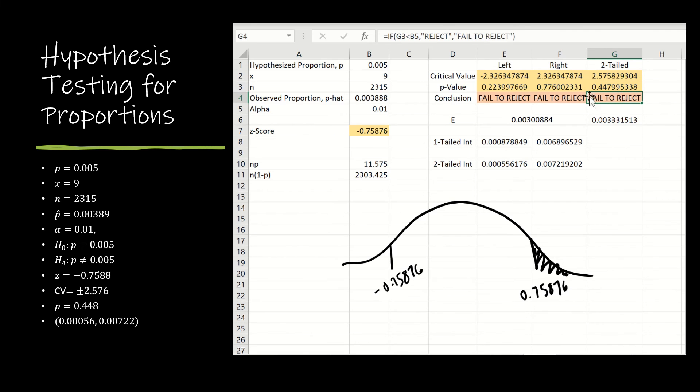And then feel free to use the reject-fail to reject hack for the if-then statement. In terms of the margin of error, it's exactly the same thing we did for a one-tailed test, except that I need to use my two-tailed critical value instead. And then again, my interval is always centered at P-hat, but now I'm using my new margin of error. And as we can see, all of these values match up with what we had found by hand.